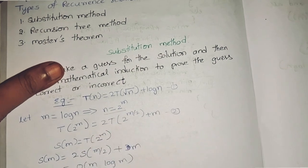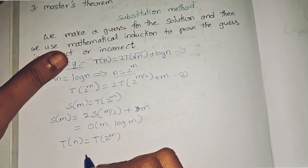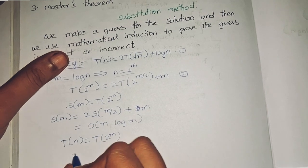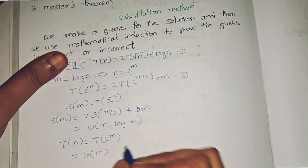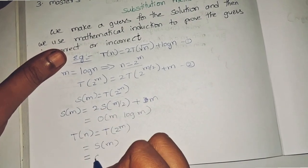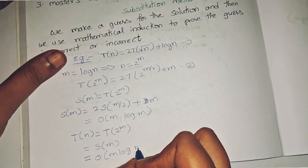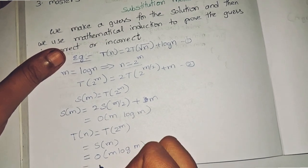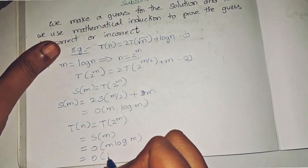That equals s(m). T(2^m) = s(m), that equals T(m), that equals Big O of m log m, that equals Big O of log n...